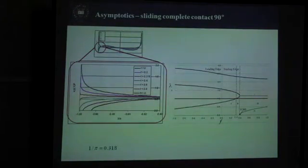At the trailing edge, as the coefficient of friction increases, the lambda value increases. Until at the magic coefficient of friction of one over pi, it changes from being singular to being bounded.